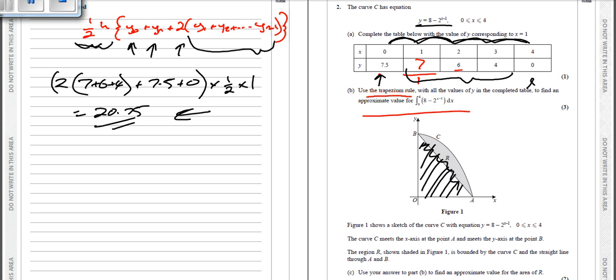Underneath this curve here, we worked that out to be 20.75. So now what we need to do is we need to work out what the area of this triangle is and we need to subtract it away from the 20.75.